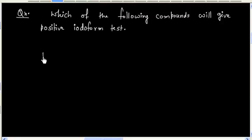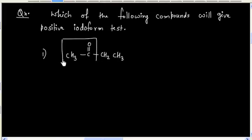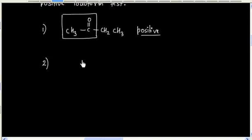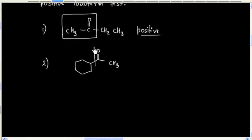Let us say if I have this compound — this compound has a methyl ketone group, so it will give a positive Iodoform test. Now let us say if I have this compound — this compound also has a methyl ketone group present, so it will give a positive Iodoform test.